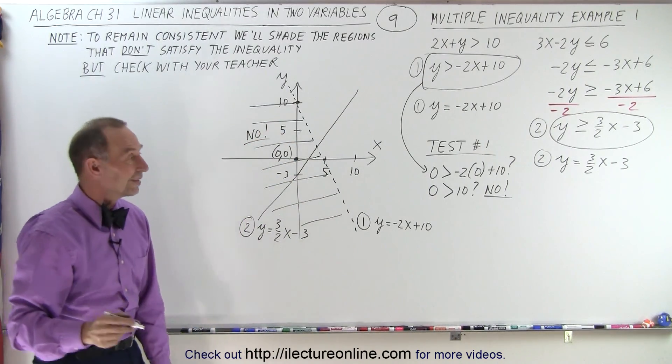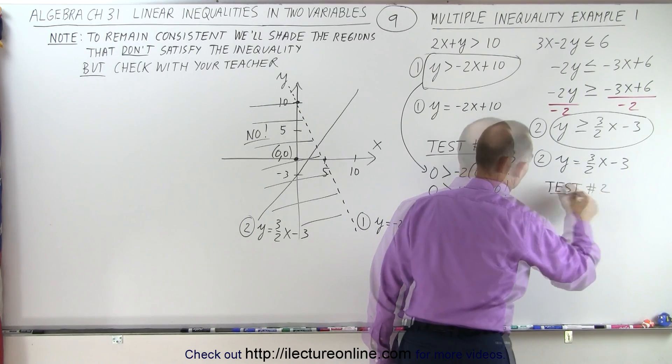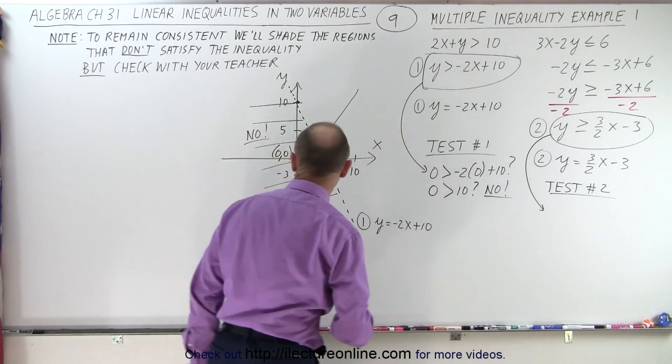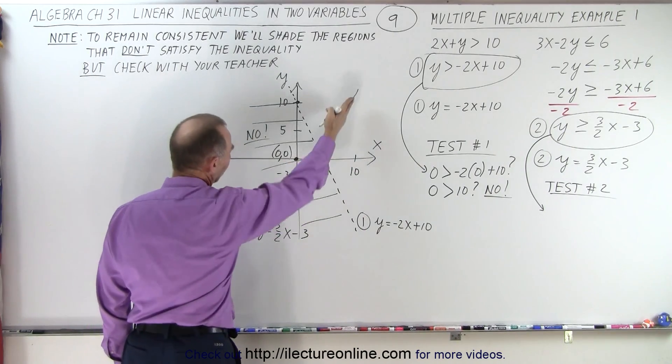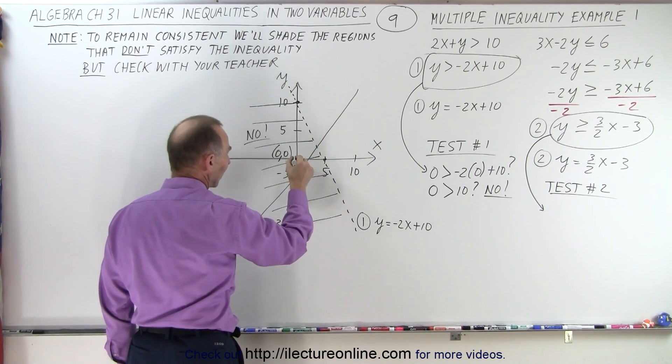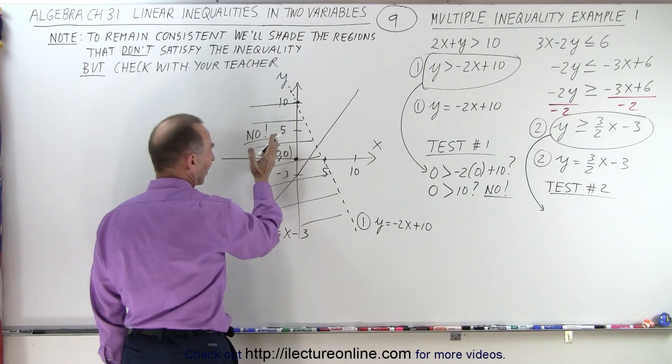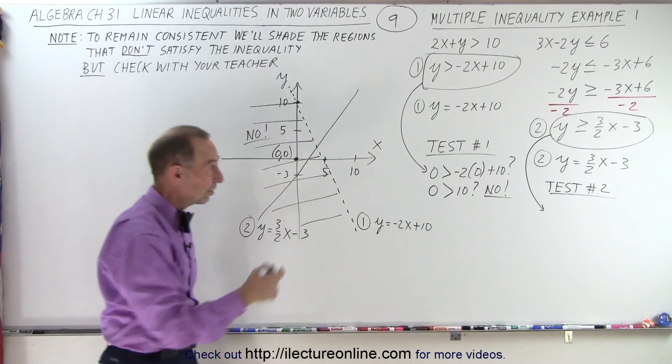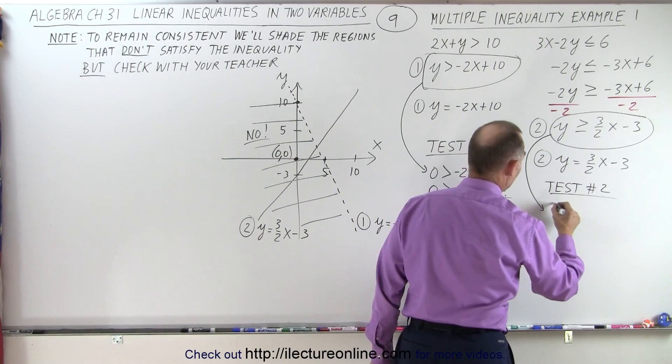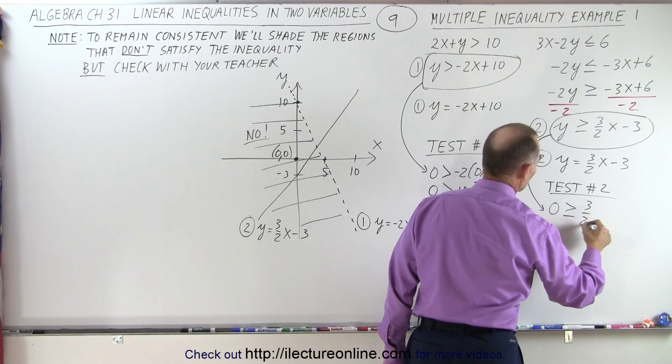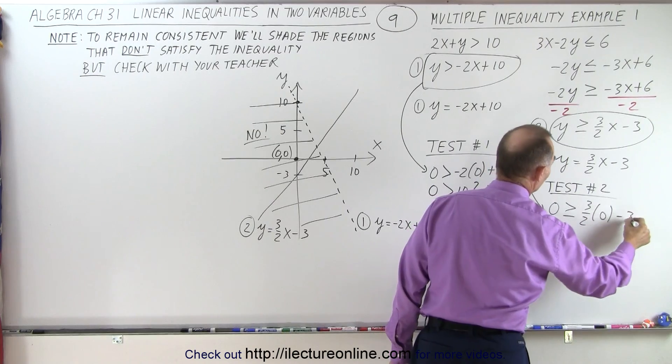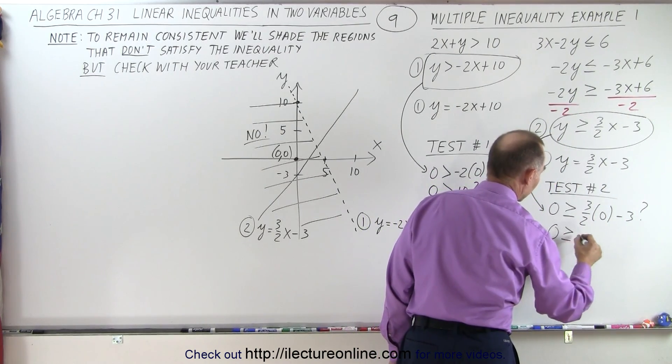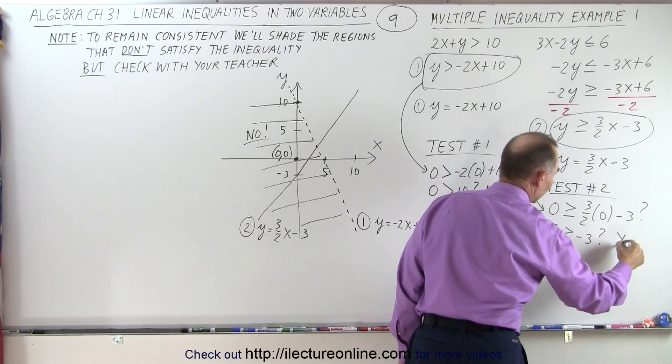Now we're going to test inequality number 2. I'm going to use this inequality, the boundary represented by this solid line. I'm going to pick the same test point on the left side of this line to see if it satisfies inequality. Let's plug in 0 for Y. 0 greater than or equal to 3 over 2 times 0 minus 3, question mark. Is 0 greater than or equal to minus 3, question mark? The answer is yes.